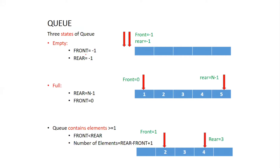There are different states for the queue. The first is the empty state — no elements in the queue. At that point, the front and rear pointers will both point at minus one. The indices go zero, one, two, three, four, and so on. For the full state, the front points at zero and the rear points at index n minus one, meaning all elements are present and the queue is full.